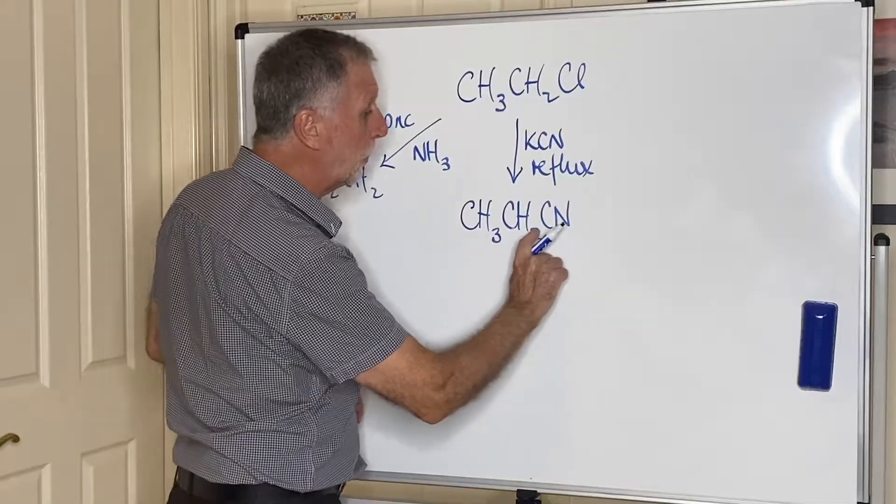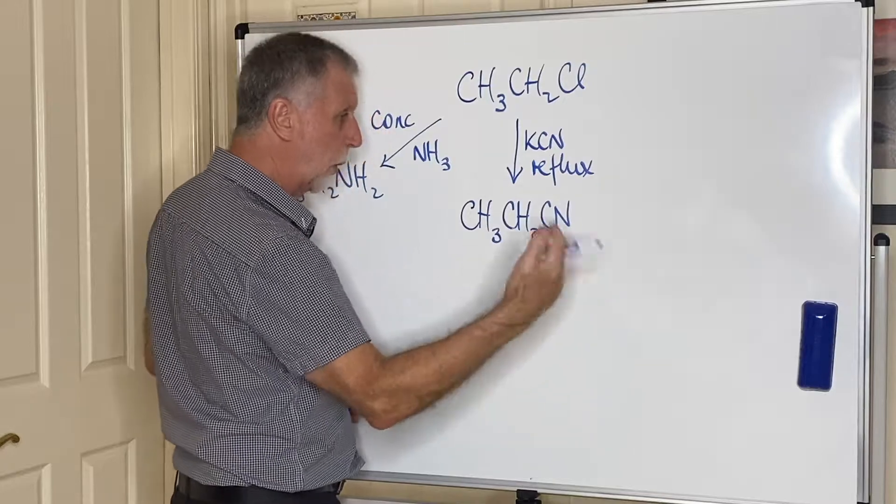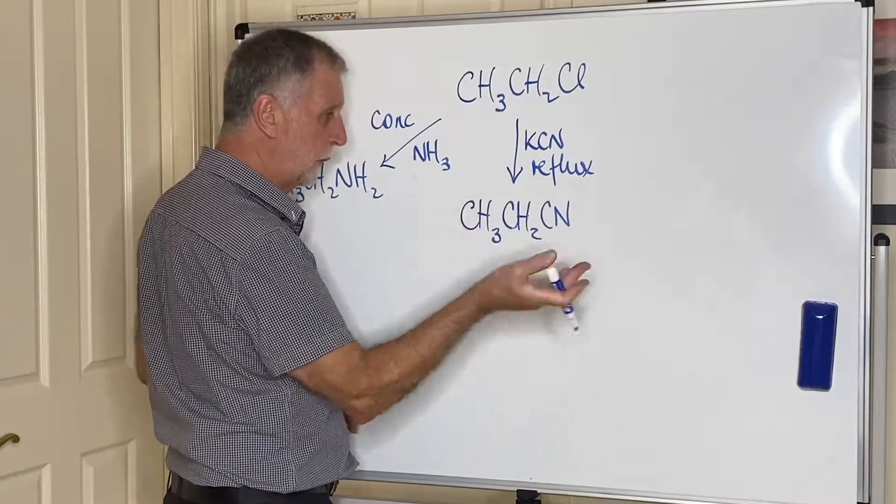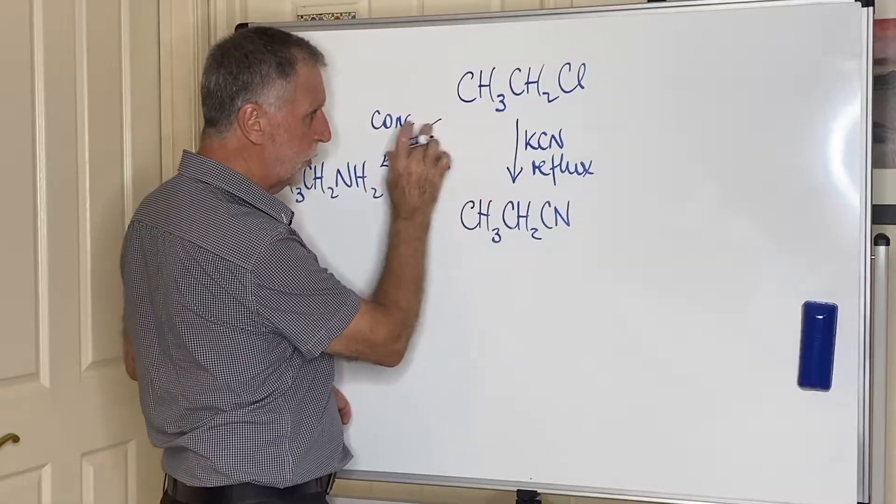This has three carbons. Therefore, this would be propan something, and the nitrile ending, propan nitrile, or propanenitrile, if you don't want to run the two ends together. Right? Both substitution reactions.